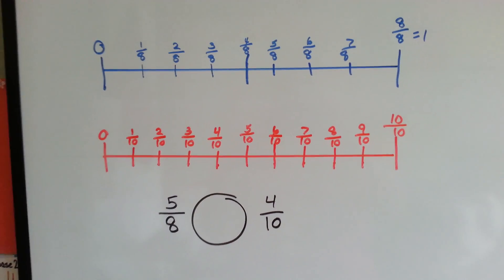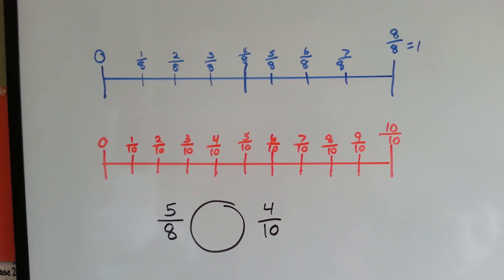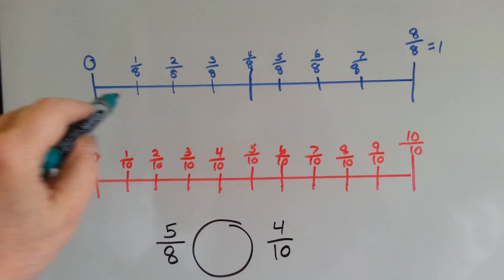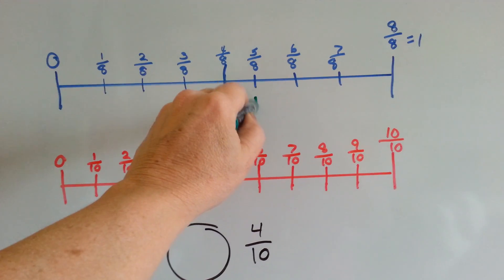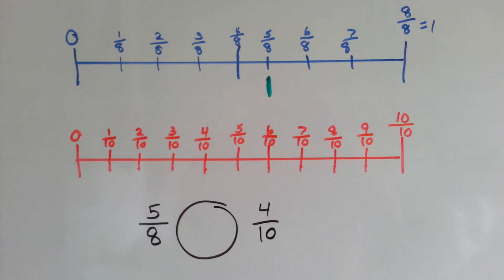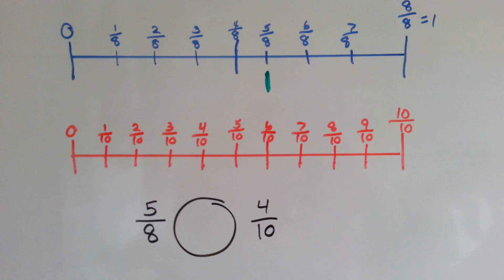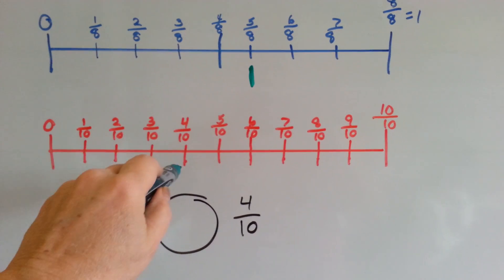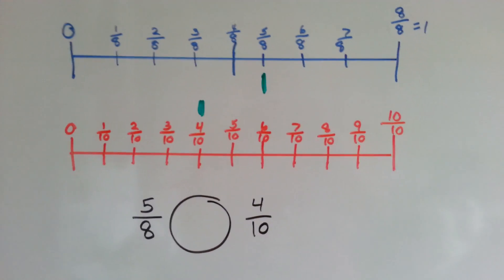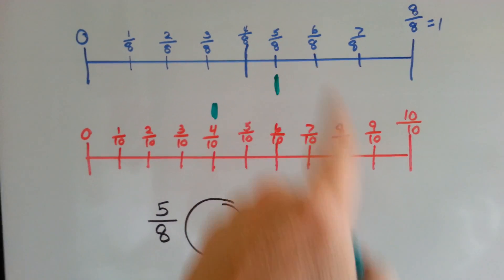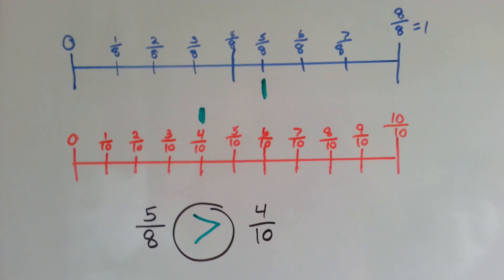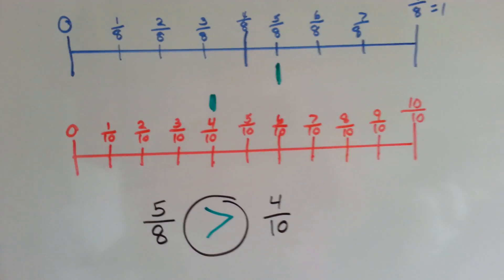We're going to see which is bigger: 5 eighths or 4 tenths. Let's find the 5 eighths on the eighths number line — 5 eighths is right here. Where's 4 tenths? On the tenths one: 1, 2, 3, 4 — here it is. So which one's bigger? Which one is closer to the end? The 5 eighths is bigger, so it's greater than. That's easy to tell on a number line — it's a lot easier than doing math.